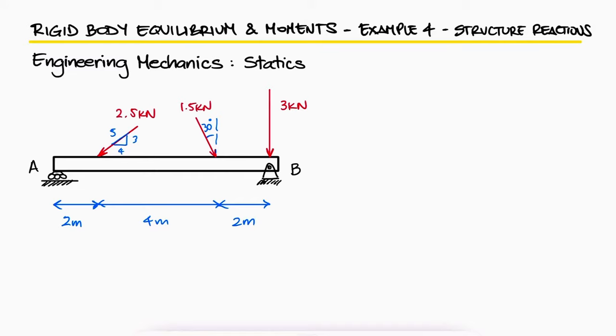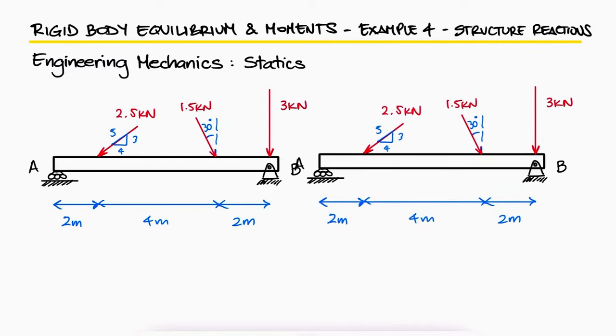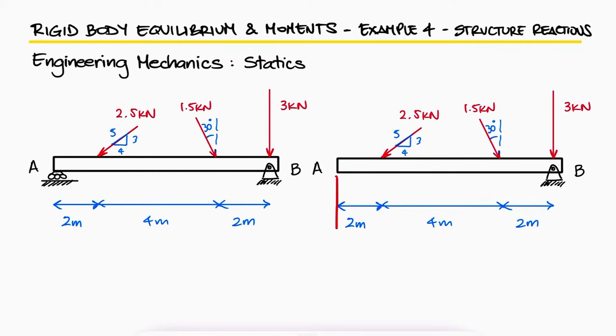We know from that main video that the only reaction that the type of support at A is a normal or perpendicular reaction. The reactions at B can be both in the horizontal and the vertical direction, and we'll assume all unknown forces to be positive.